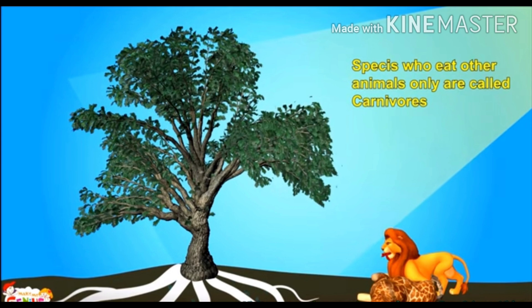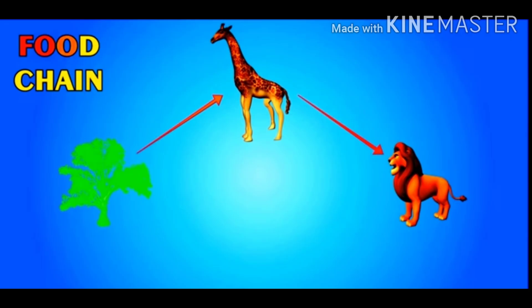In the picture you can see that a lion has attacked the giraffe and killed it. We all know that species who eat other animals are called carnivores, or carnivorous animals. Here in this picture, the lion is a carnivorous animal.